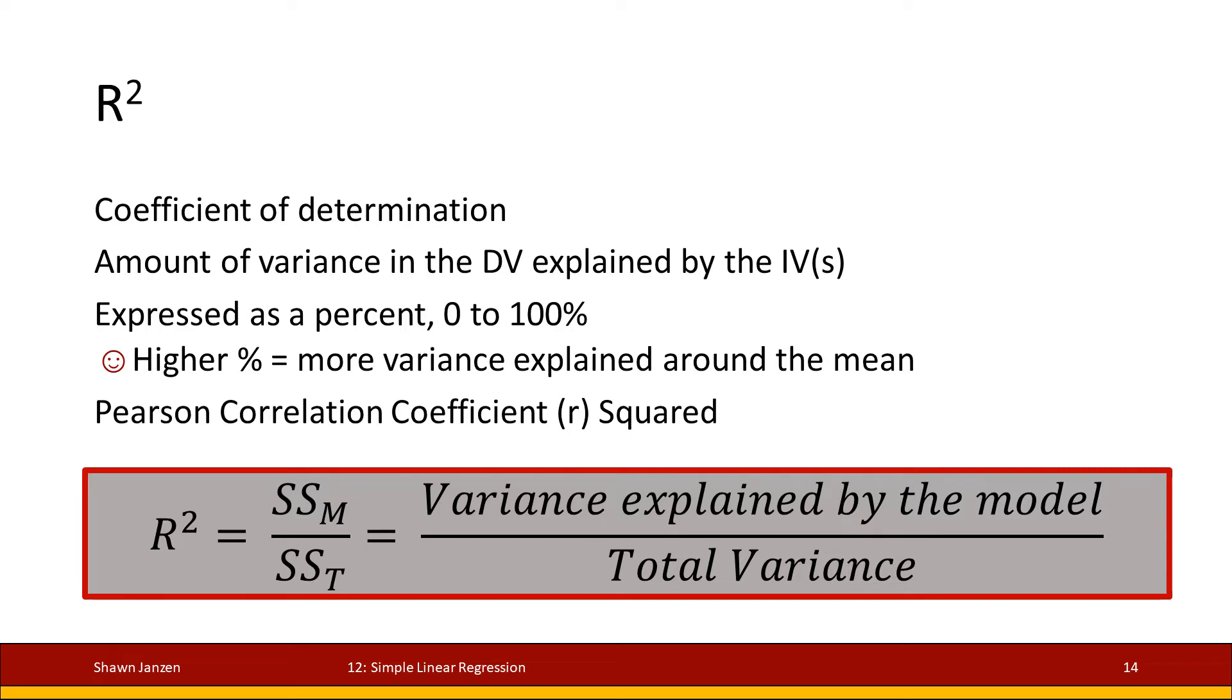I also mentioned before that R² is looking at the same idea. So the F-test is how much you could explain over your error. R² is looking at how much you can explain over the total variance, and it comes out as a proportion. We can express it as a proportion or as a percentage, and the higher the percentage, the more variation is being explained.